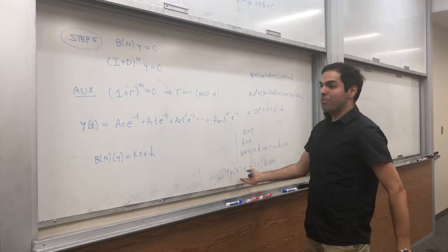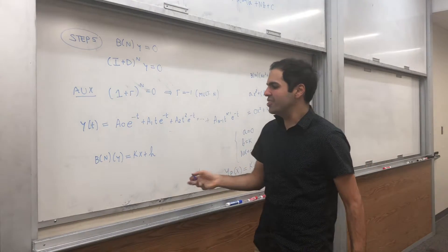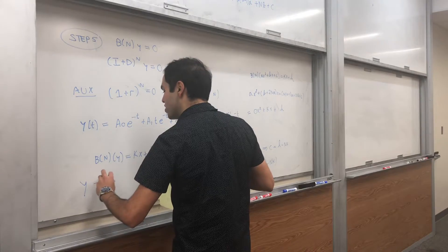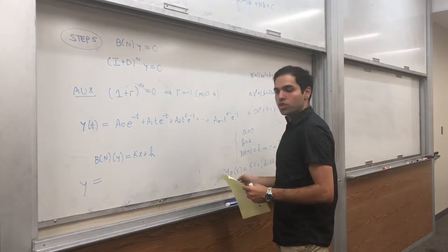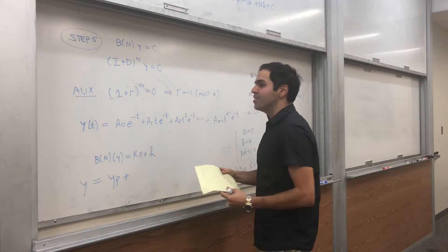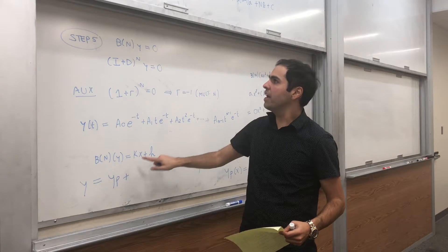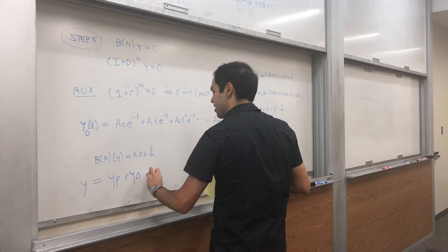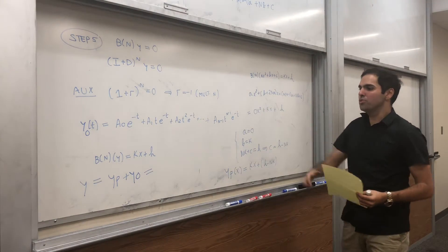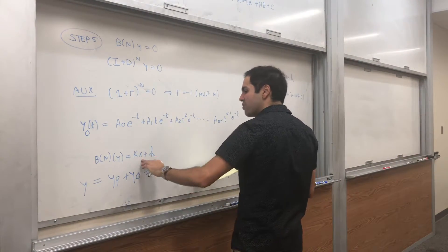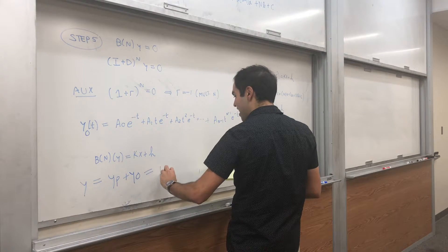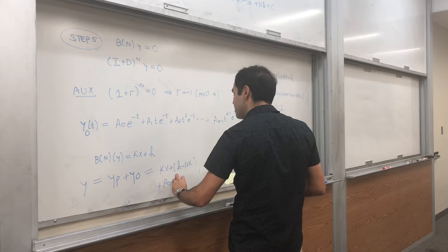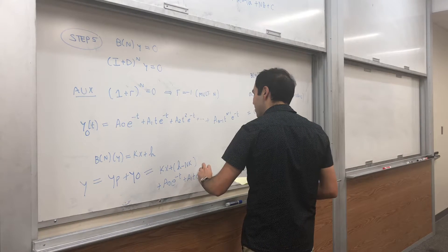By the theorem for linear differential equations, the general solution is the particular solution plus the homogeneous solution. We've already found both, so the general solution of B_n(y) = kx + h is: y = kx + (h - nk) + a_0*e^{-t} + a_1*t*e^{-t} + ... + a_{n-1}*t^{n-1}*e^{-t}. You could extend this to more general right-hand sides as well.